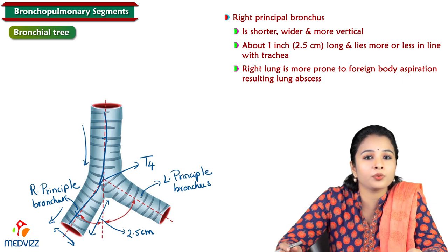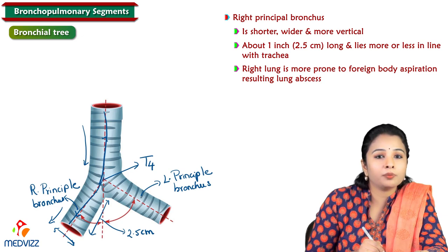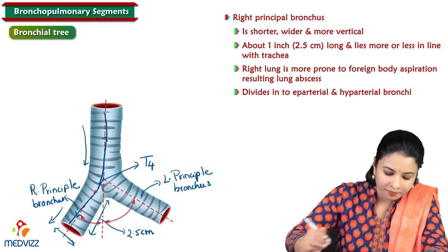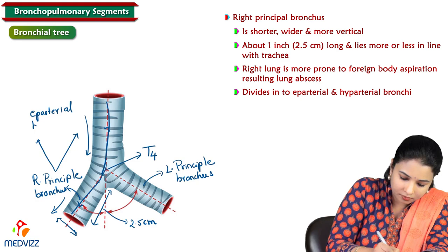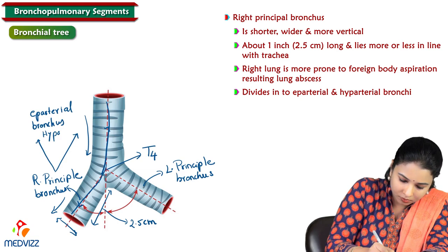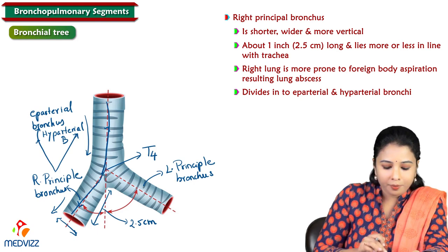Before entering the lung, the right principal bronchus further divides into eparterial and hyparterial bronchi.